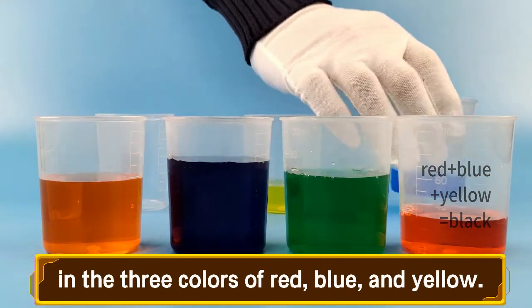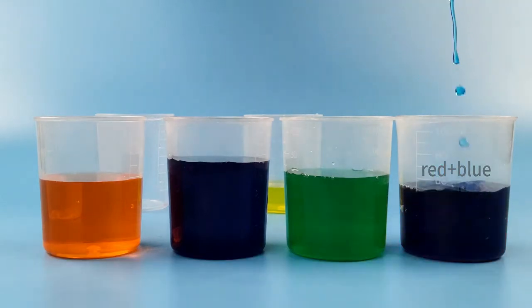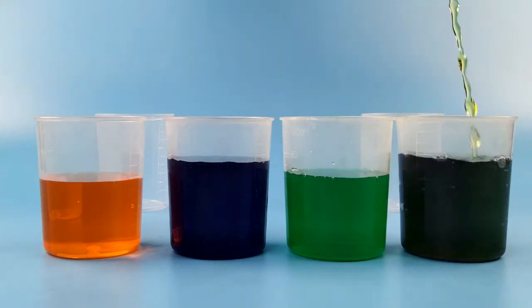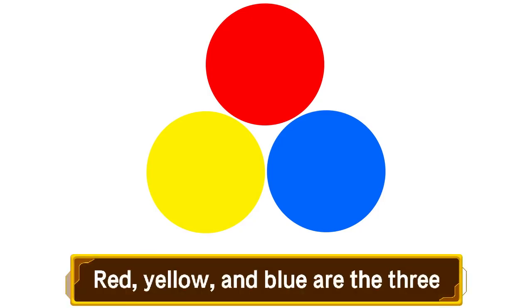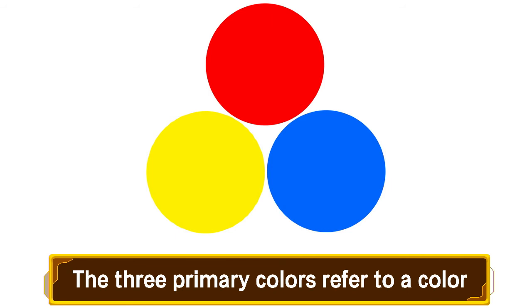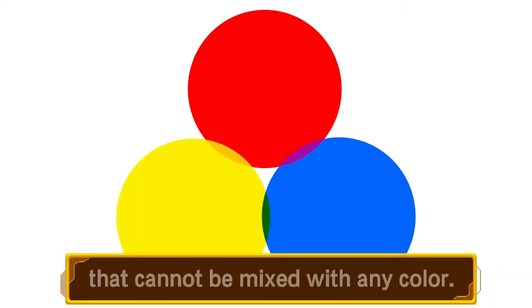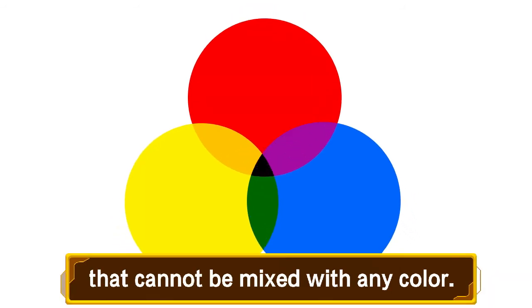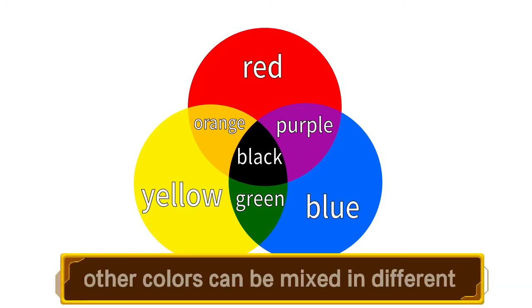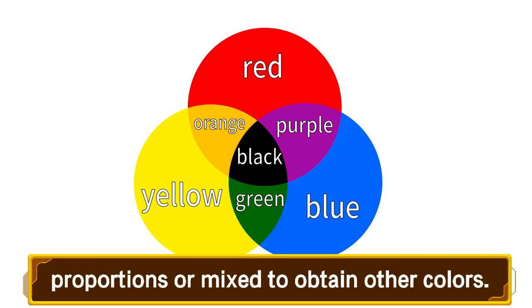Scientific principles: Red, yellow, and blue are the three primary colors in pigment. The three primary colors refer to colors that cannot be mixed with any other color. In addition to the three primary colors, other colors can be mixed in different proportions to obtain other colors.